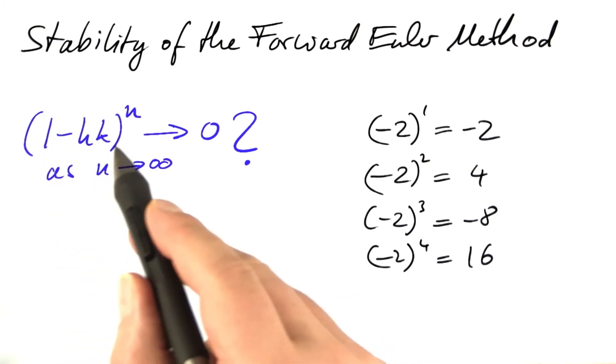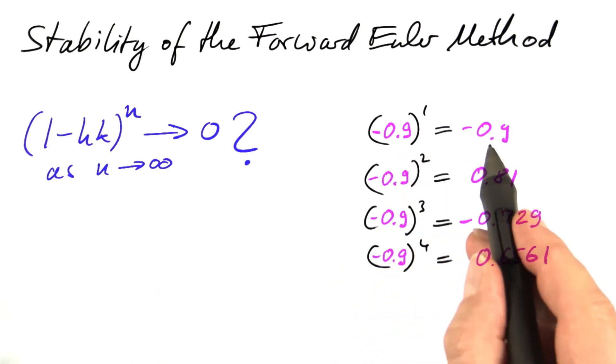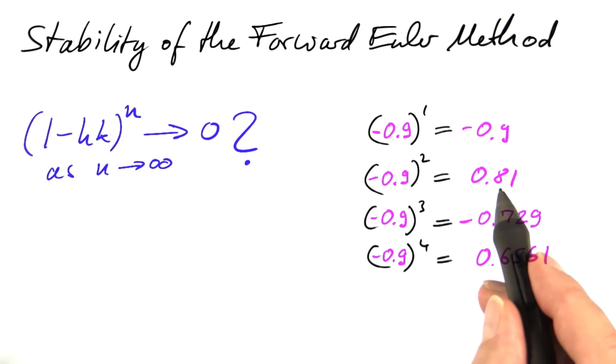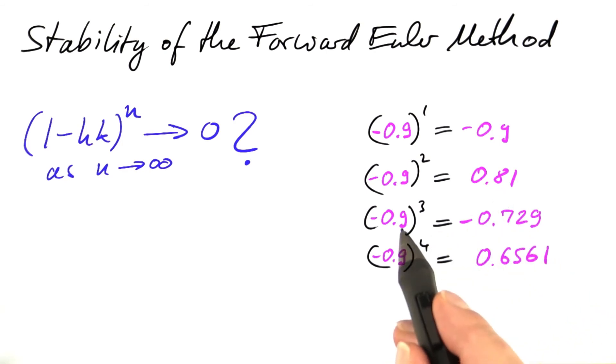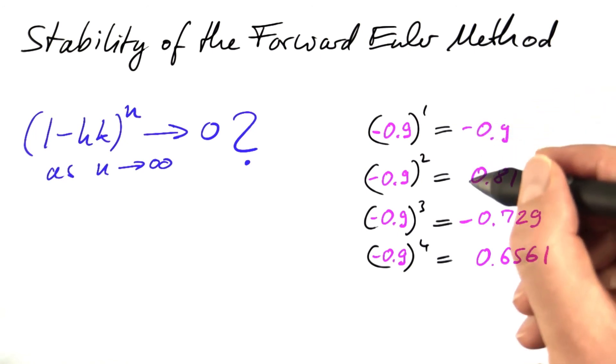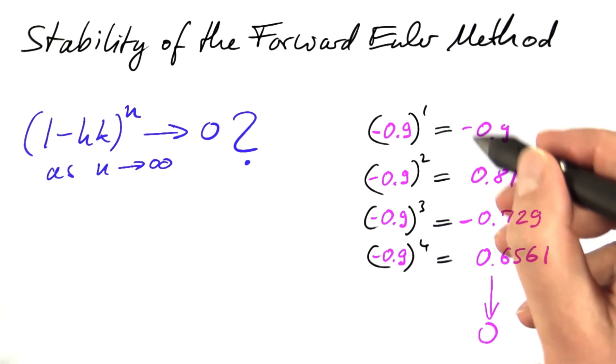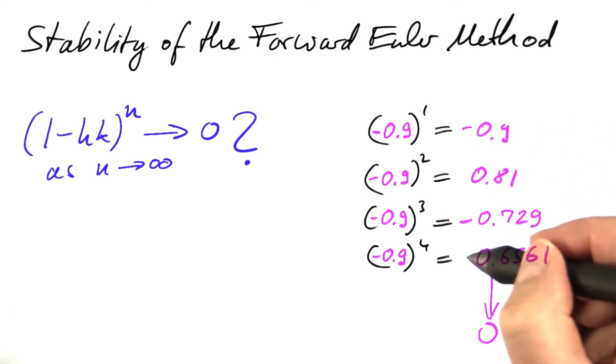So let's try a different number. What would happen if the inner expression was minus 0.9, and we took powers of minus 0.9? The first power is, surprise, minus 0.9. The second power is 0.81. The third power is minus 0.7 something. The fourth power is 0.6 something. Each time we're losing 10% in magnitude, but you see that the sign keeps changing. Minus, plus, minus, plus. So this indeed decays to zero, but in a strange fashion. It oscillates.